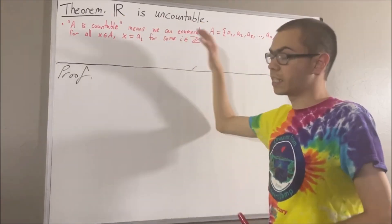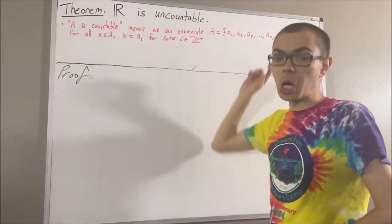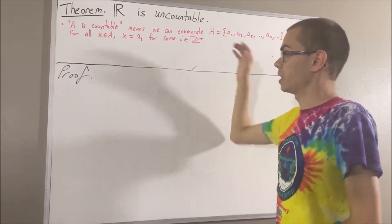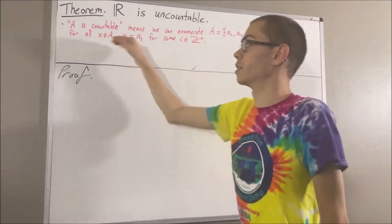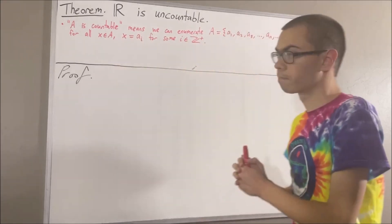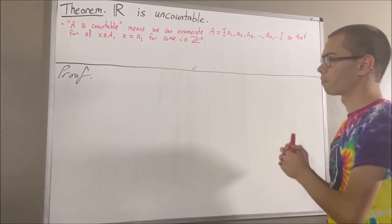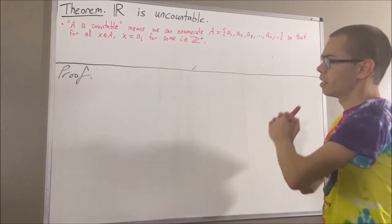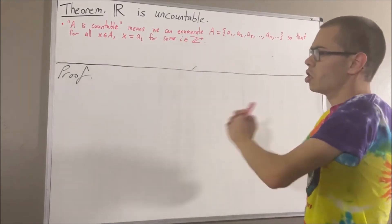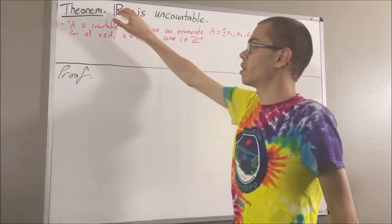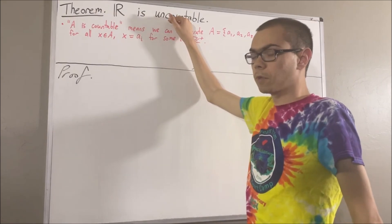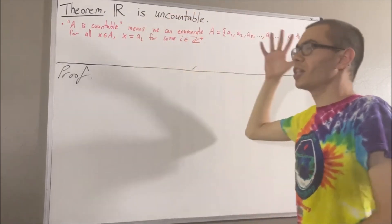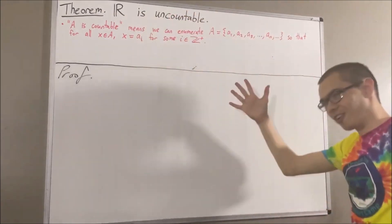To say that a set is uncountable means we cannot enumerate the elements of a set in this way. Now, to prove that R is uncountable, we are going to use the following theorem.